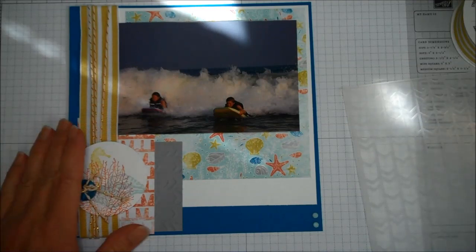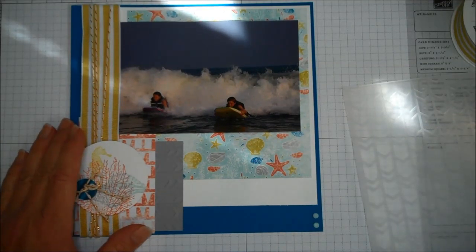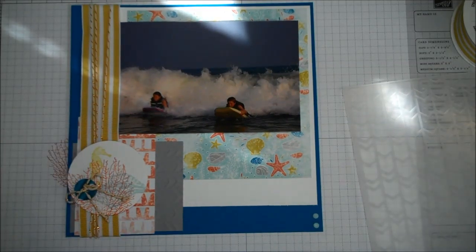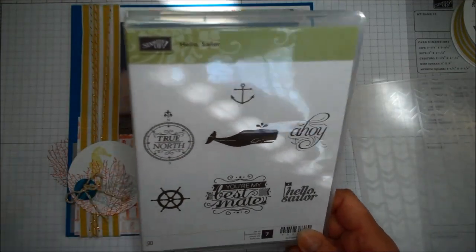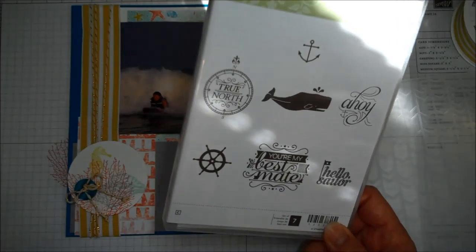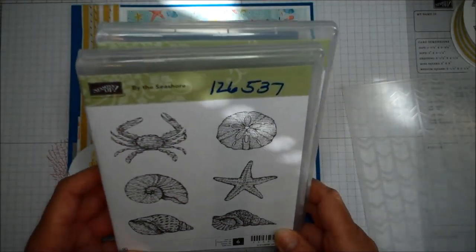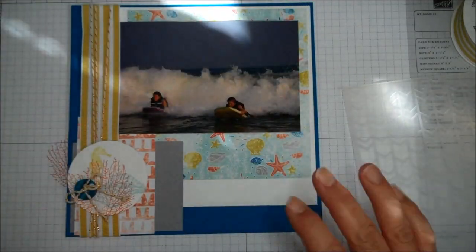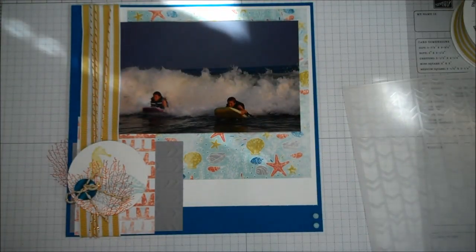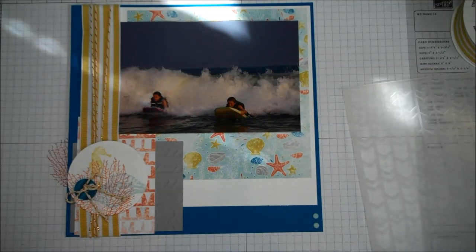And I think the By the Tide, the new Ahoy Mate would be a good one, or excuse me, I think it's called Hello Sailor. You could use this one. You could also use the By the Seashore one, and then there's also the Open Sea that would work great with the new designer series paper that Stampin' Up has called High Tide.